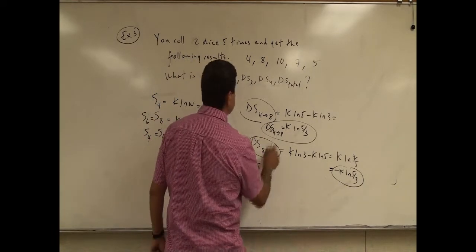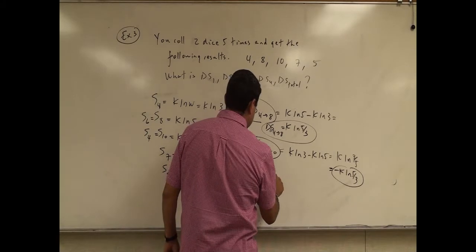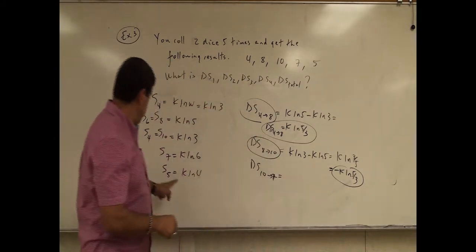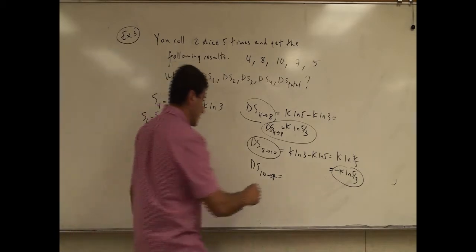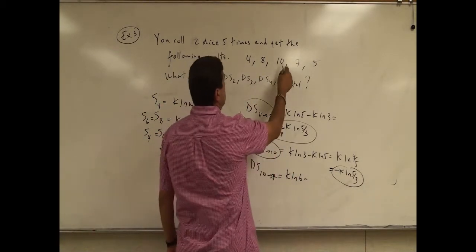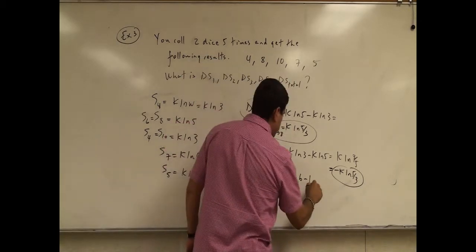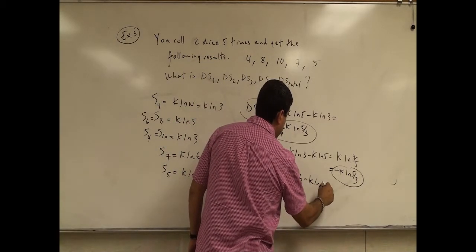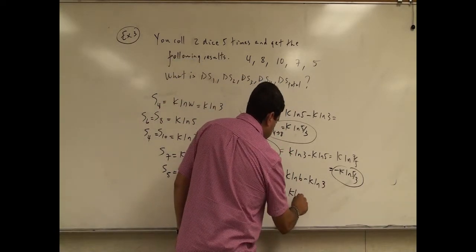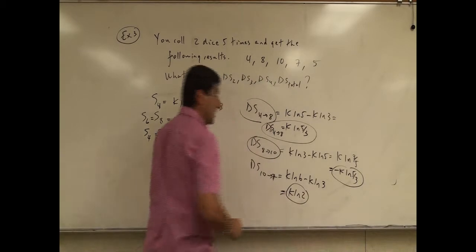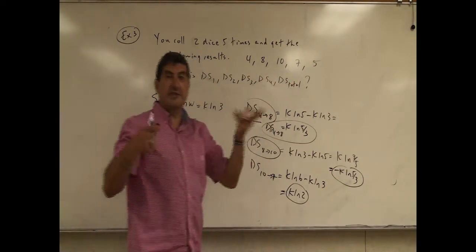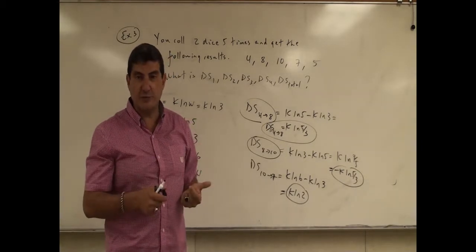How about delta S10 to 7? That's going to be the entropy of seven — kln(6) — minus the entropy of ten — kln(3) — so it's going to be kln(2). That's a big increase in entropy from ten to seven, but seven is the most likely state, so it has a very high entropy. We expect that.